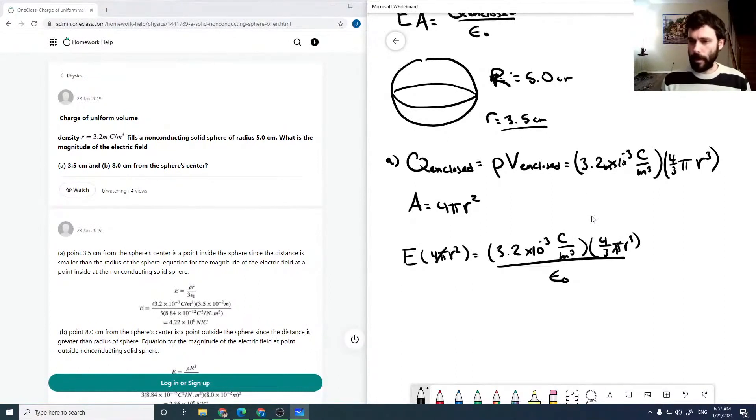We can divide out the pi and the 4, and get our E field is 3.2 times 10 to the minus 3 coulombs per meter cubed over 3 epsilon naught. We can get rid of r squared and this drops down to just r.